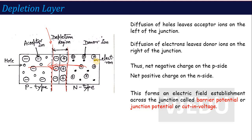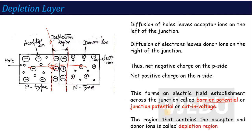This barrier formed at the junction is called the depletion barrier, junction potential, barrier potential, or cutting voltage. The region formed here is called the depletion region. The depletion layer concept is a very important topic.